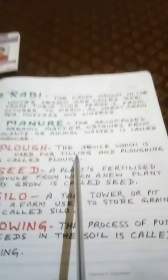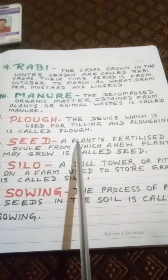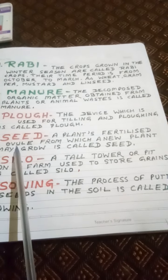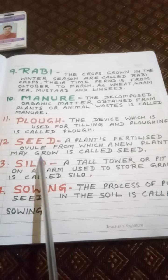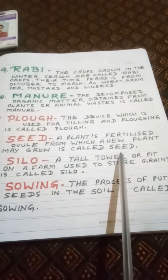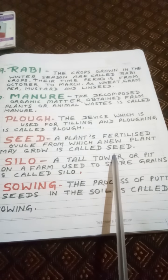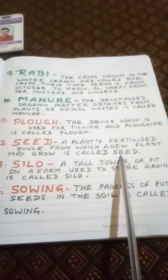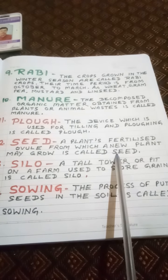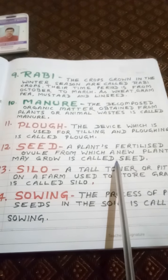Next keywords: Plough — the device used for tilling and plowing is called a plough. Seed — a plant's fertilized ovule from which a new plant may grow is called a seed, such as pea seeds, wheat seeds, and gram seeds.